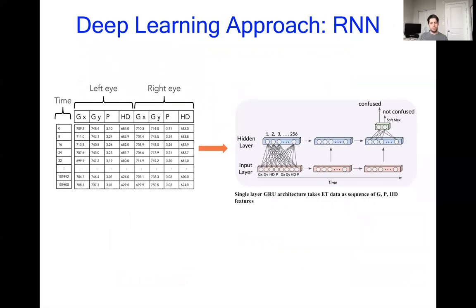What we did first was use these raw sequences directly as input to a recurrent neural network, in particular the gated recurrent unit variant of the recurrent neural network, which is a neural network specifically for processing sequential data like eye tracking data. Problems with this were the length of the data items and the small size of the data set, typically not a good thing for a deep learning method.